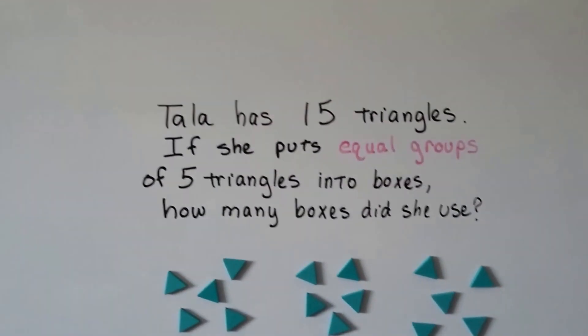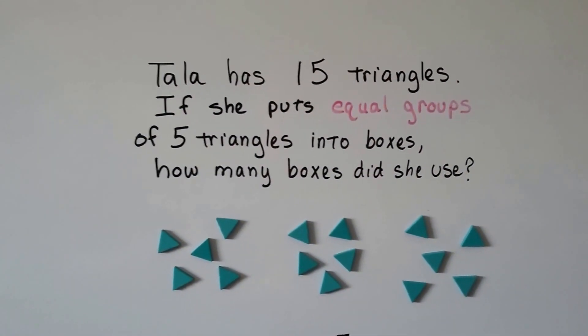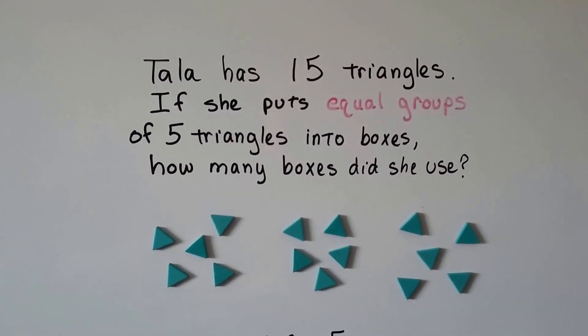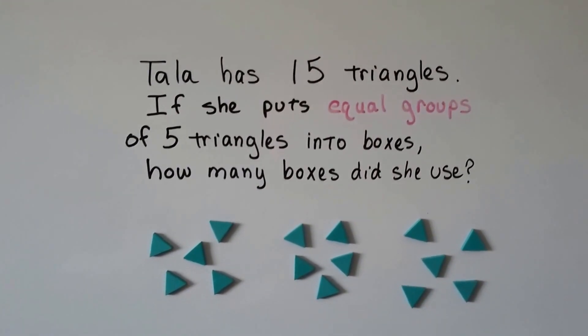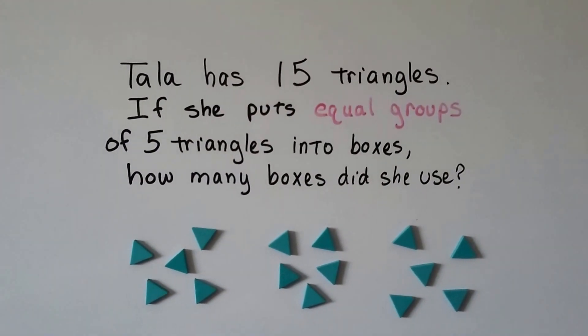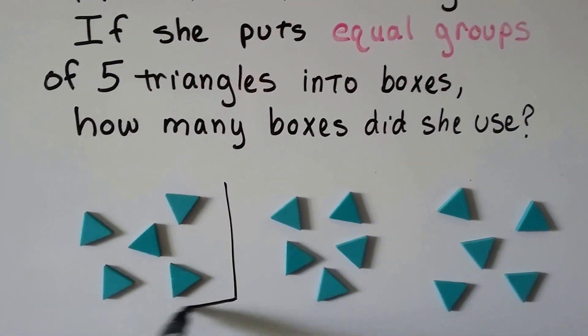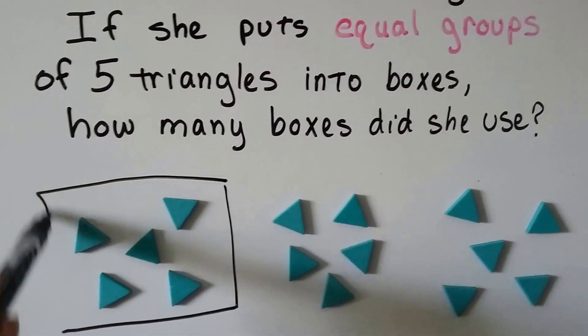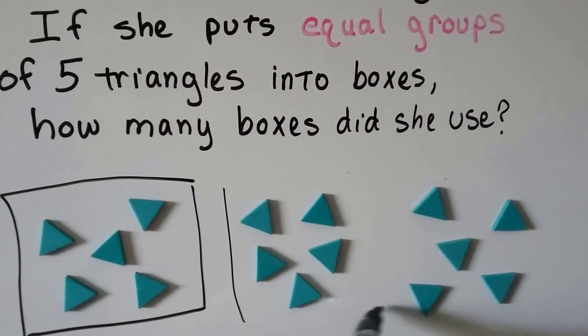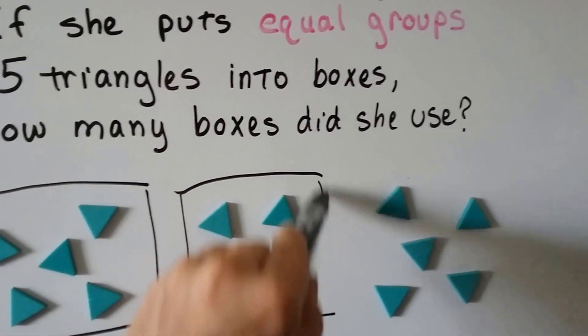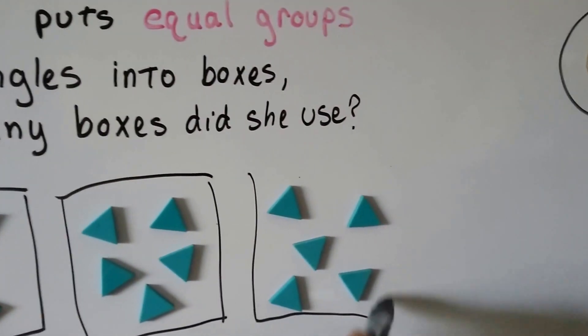So if Tala has 15 triangles, if she puts equal groups of five triangles into boxes, how many boxes did she use? So we need to group them to five triangles. There's five. There's five. And there's five.